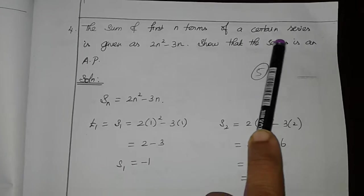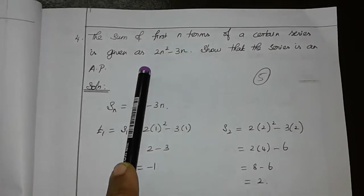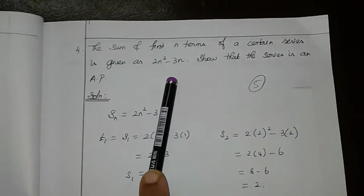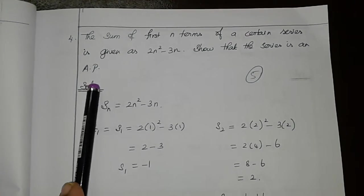The sum of first n terms of a certain series is given as Sn = 2n² - 3n. Show that the series is an AP.